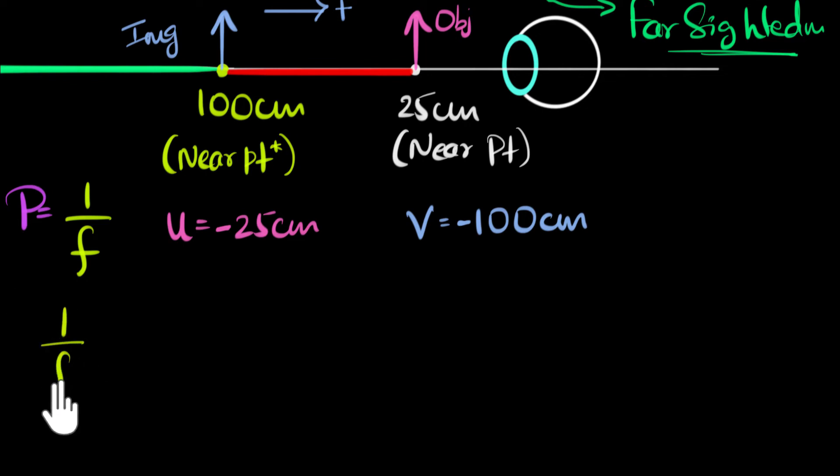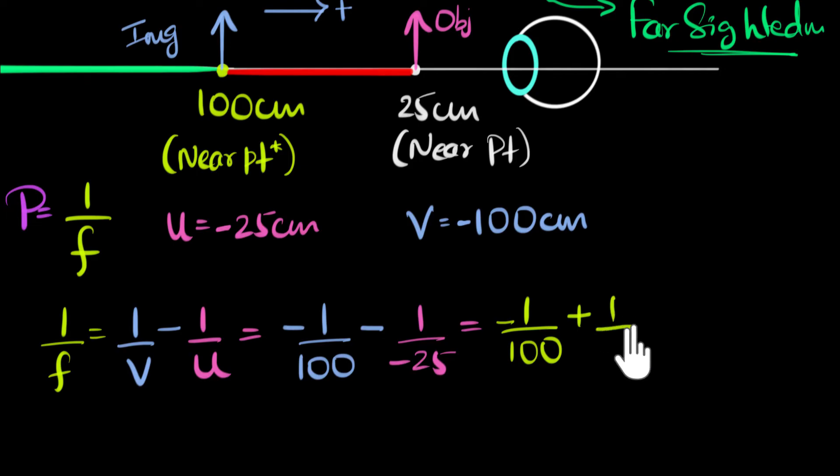And so now we can go ahead and use the lens formula. Because since we know U and V, we can calculate F. So let's calculate this. The lens formula says 1 over F is 1 over V minus 1 over U. And so that gives us 1 over V, that's negative 1 over 100 minus 1 over negative 25. If you solve that, you get negative 1 over 100 plus 1 over 25. Take 100 as common. You get minus 1 plus 4. That gives us 3 over 100.